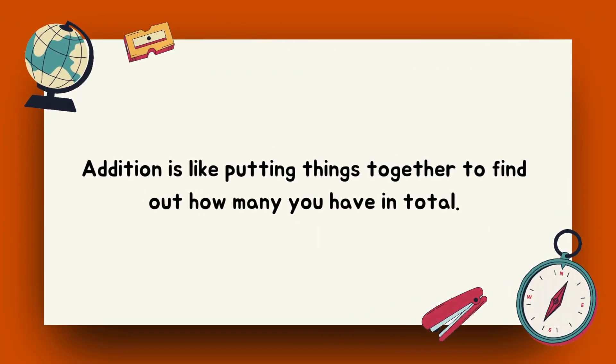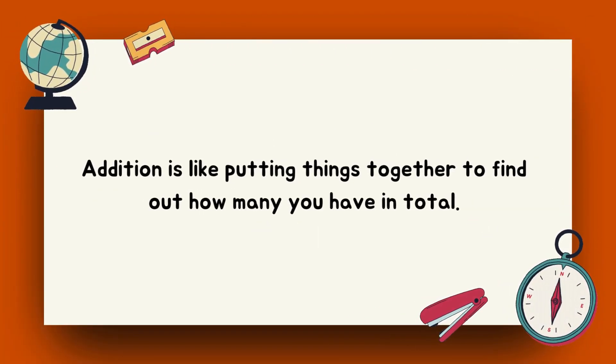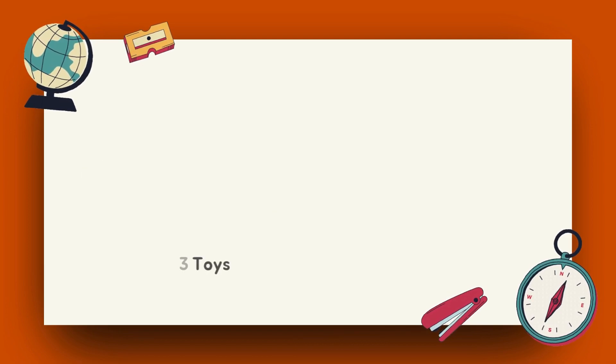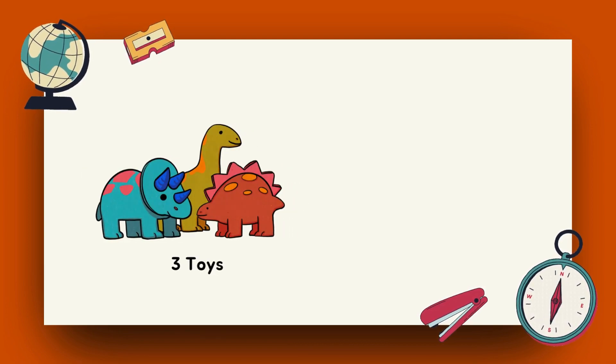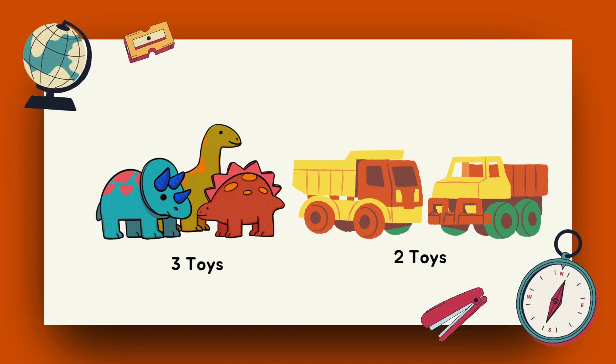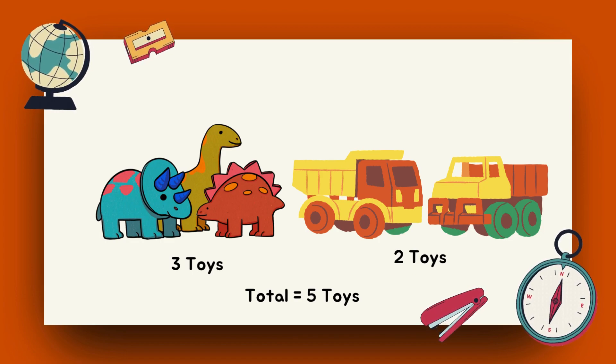Addition is like putting things together to find out how many you have in total. If you have three toys and your mother gives you two more, you add them up to see you now have five toys. It's a way of figuring out the total when you join or combine different numbers.